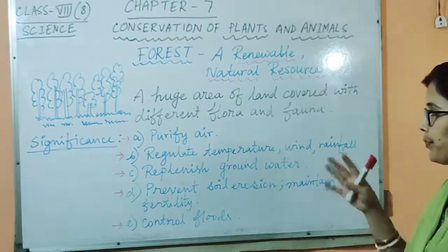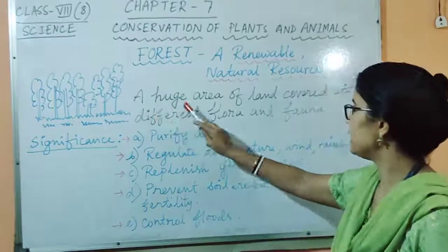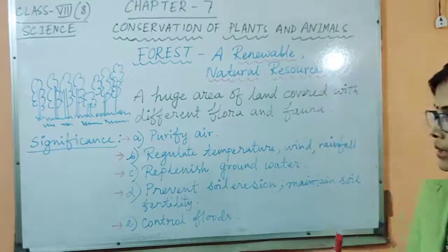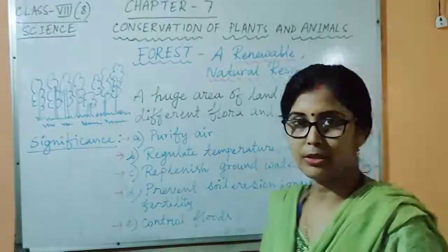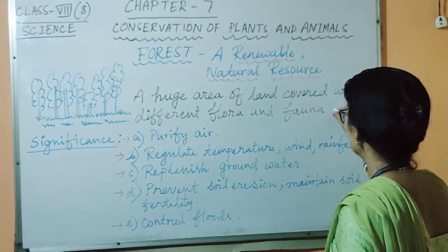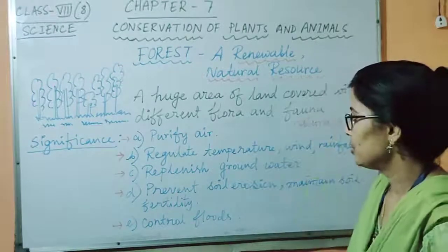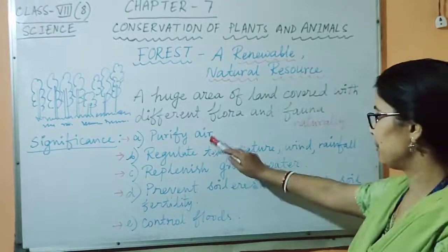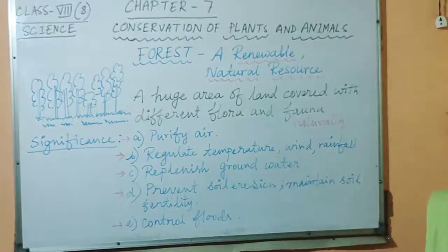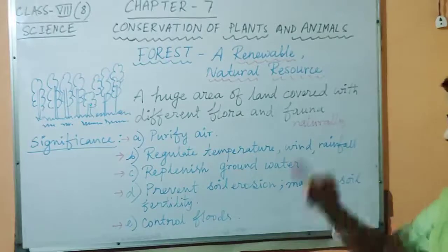Today we will end with our last topic — that is forest. What is a forest? You can define forest as a huge area of land covered with different flora and fauna, naturally, because it is a natural vegetation. The significance of forests: forests purify air; forests regulate temperature, wind, and rainfall on earth; forests replenish groundwater, that is the water level; forests prevent soil erosion, maintain soil fertility; and forests also control floods.